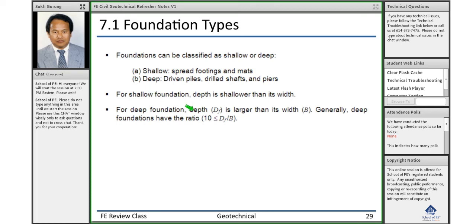You can read that shallow foundation depth is shallower than the width of the foundation, whereas in the case of deep foundations, depth of the foundation (df) is larger than the width. Generally, your df/d ratio for deep foundation is greater than or equal to 10.